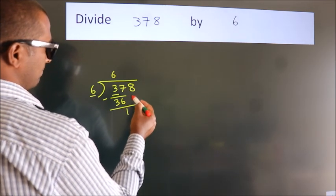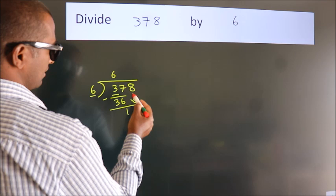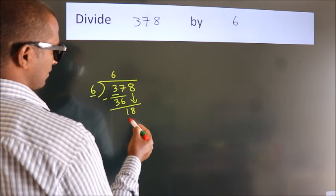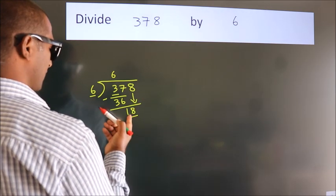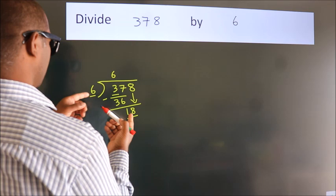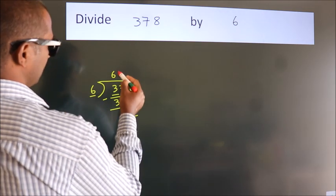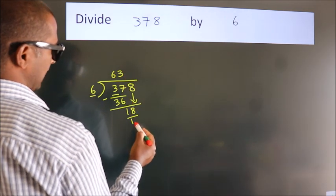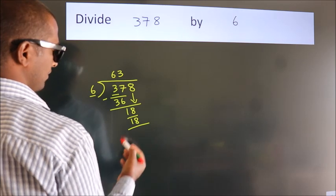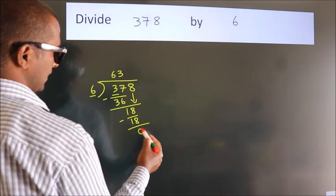After this, bring down the beside number. So 8 down. So 18. When do we get 18? In 6 table, 6×3 is 18. Now we subtract. We get 0.